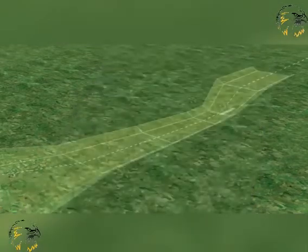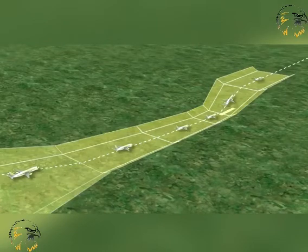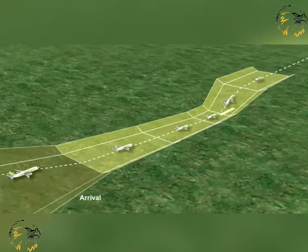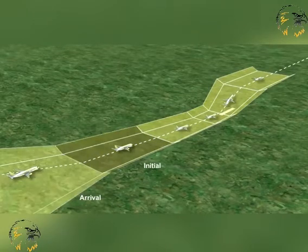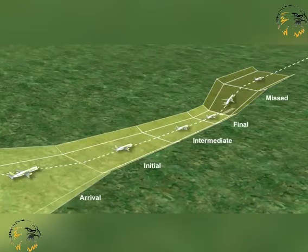The five segments of an instrument approach are shown here. They are: arrival, initial, intermediate, final, and missed approach.